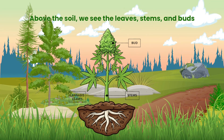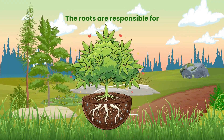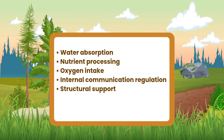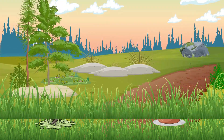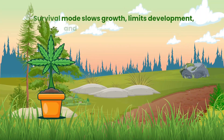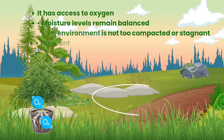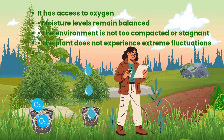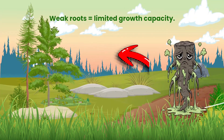Above the soil we see the leaves, stems and buds. Below the soil is the engine that drives it all — the root system. The roots are responsible for water absorption, nutrient processing, oxygen intake, internal communication regulation, and structural support. If the roots are stressed, the plant is stressed. A stressed plant does not focus on building flower mass, it focuses on survival. Survival mode slows growth, limits development and reduces yield potential. A root system thrives when it has access to oxygen, moisture levels remain balanced, the environment is not too compacted or stagnant, and the plant does not experience extreme fluctuations. Healthy roots — strong developmental potential. Weak roots — limited growth capacity.